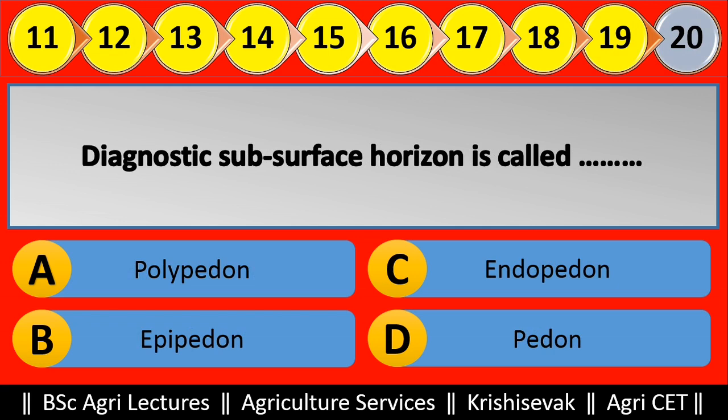Question 20: Blank — options are: (a) Polypedon, (b) Epipedon, (c) Endopedon, (d) Pedon. Right answer is Endopedon, option C.